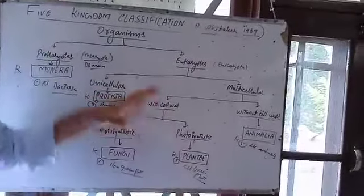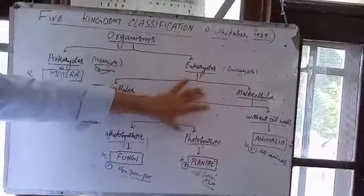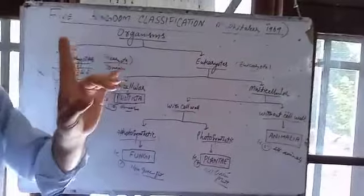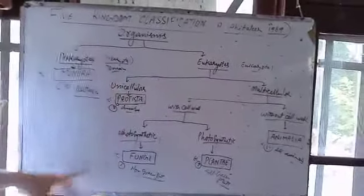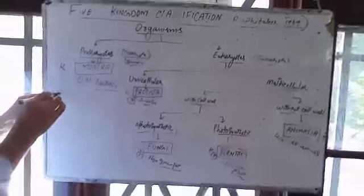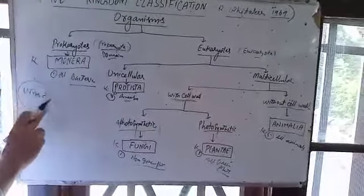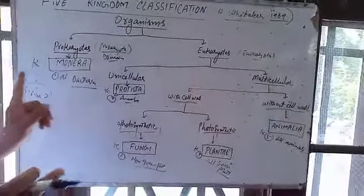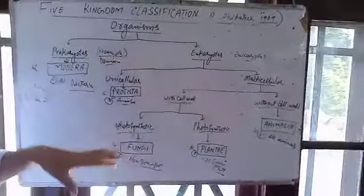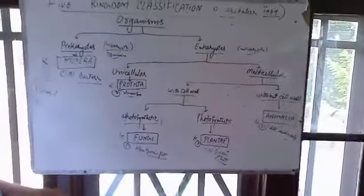The five kingdom system of classification has one drawback: it cannot include viruses. Viruses are not included because a virus is not formed of a cell. That was today's lesson and we will take these kingdoms one by one in the next lesson. Thank you.